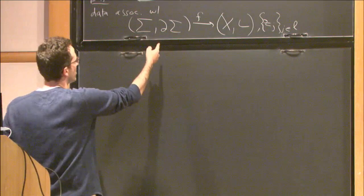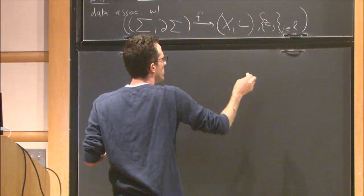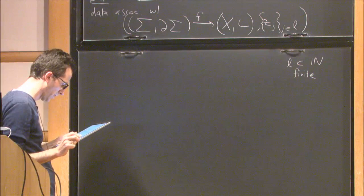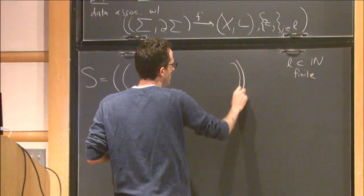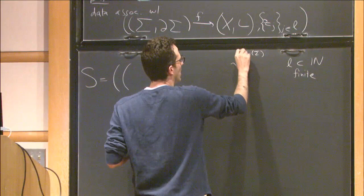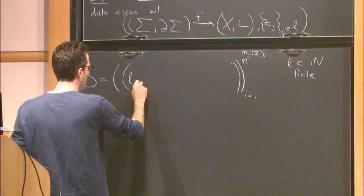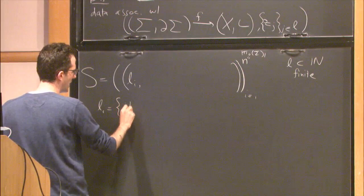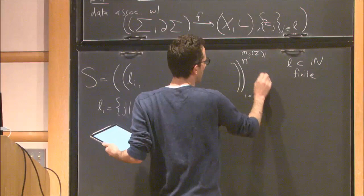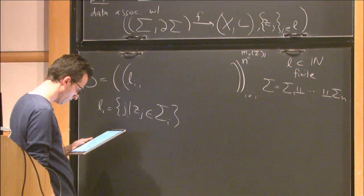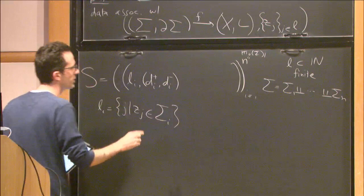Sigma is a smooth Riemann surface, possibly disconnected with boundary. It will be convenient to assume that the labeling set is some finite subset of N. What is the data in S? First, there's the number of connected components of the Riemann surface. Then we have a tuple of data for each connected component. Let's write sigma as a disjoint union of sigma 1 through sigma N. We have the subset of markings — those j's such that z_j is on the i-th component — and the degree of the map restricted to sigma_i, which is an element of H2(X,L).